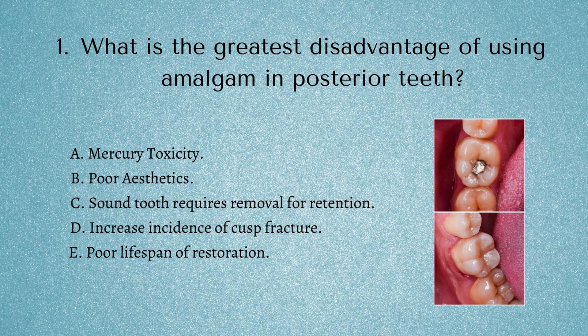Amalgam and dental materials is a common topic that can come up a lot in these exams. For amalgam specifically, you should look at things like the chemical reaction that goes on when amalgam is setting, the different phases and stages of it, the different components — silver, tin, and all those things — the different concentrations, how changing the amount of copper can change the properties of amalgam, and how all those things affect its characteristics. Those are all very common things to be asked in this exam.